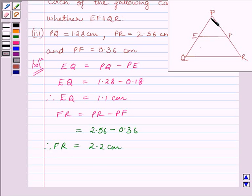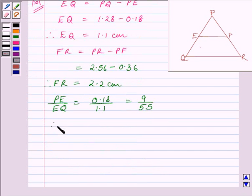Let us now find out the ratios PE upon EQ and PF upon FR. PE upon EQ is equal to 0.18 upon 1.1, which is further equal to 9 upon 55. So therefore, PE upon EQ is equal to 9 upon 55.